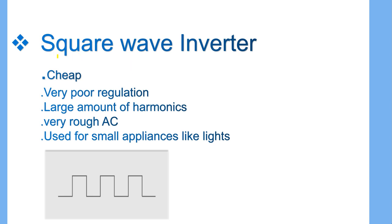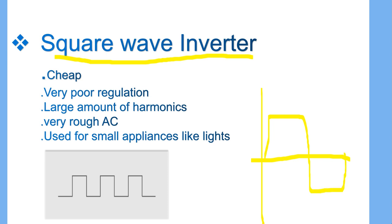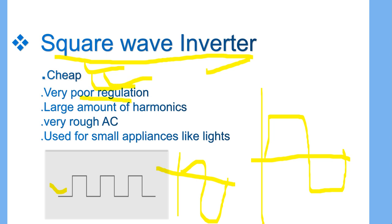First, the square wave inverter. The wave looks like a square — one positive and one negative per cycle. Earlier, only square wave inverters were available and we used them for lights and some tube-type TVs, but not for LED TVs. Square wave inverters come at a very cheap price in the market, but their voltage regulation is very low and there are many power losses.